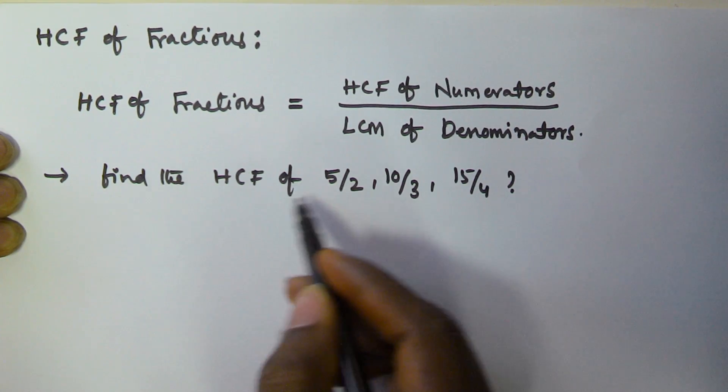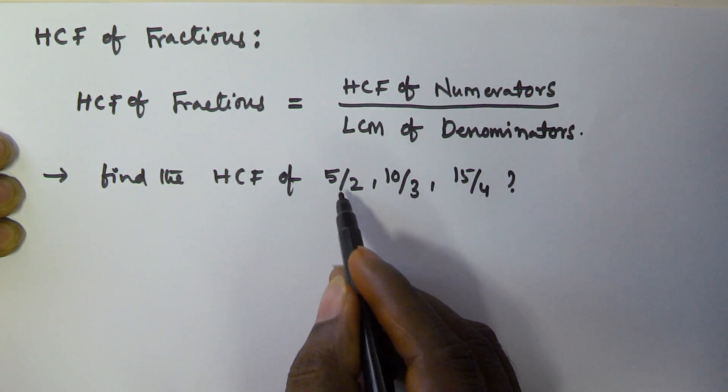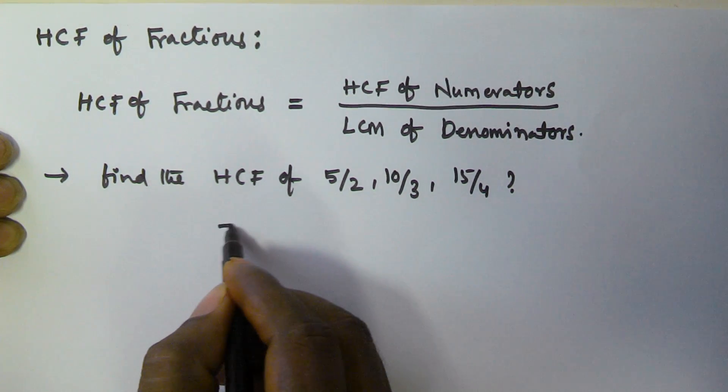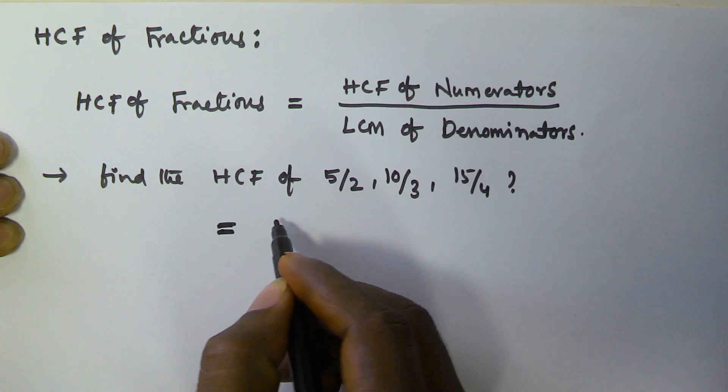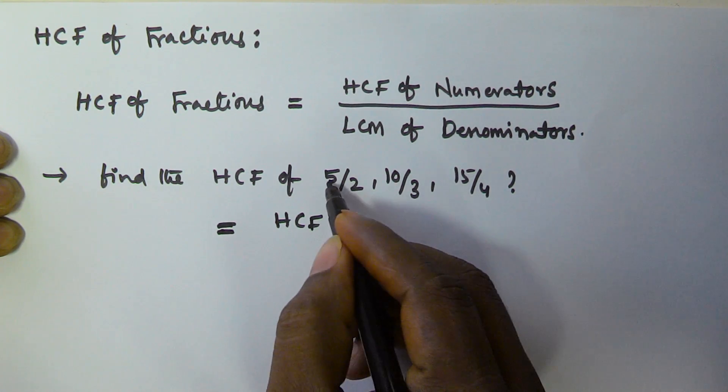So find the HCF of 5 by 2, 10 by 3, 15 by 4. So the HCF of these fractions is given by HCF of numerators, here numerators are 5, 10, 15, by LCM of denominators.